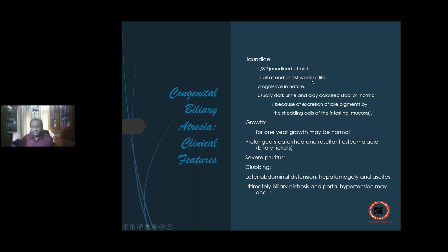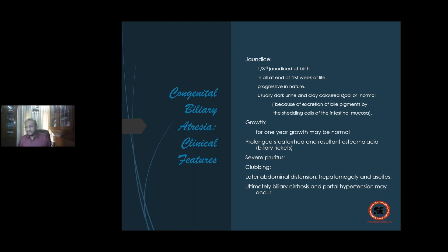Jaundice is progressive because inflammation keeps progressing. Usually dark urine and clay-colored stool are present. Rarely, normal-colored stool can occur depending on the degree and duration of jaundice — higher and longer jaundice duration, normal stool appears because bile expression begins by shedding of distal mucosal cells.